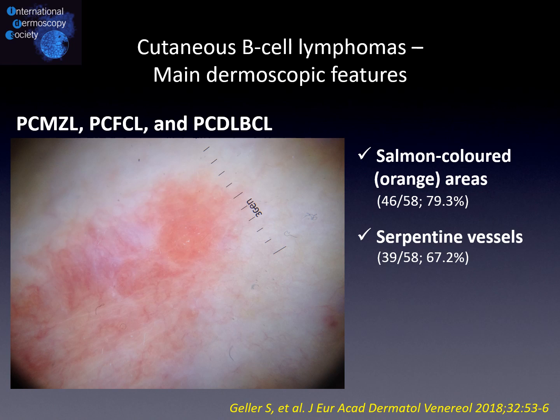According to the larger study on the topic, we don't have any relevant difference in dermoscopic appearance among the three categories of cutaneous B cell lymphomas. The two main dermoscopic features are represented by salmon-colored orange areas, visible in about 80% of cases and due to a very dense, compact cellular infiltrate in the dermis, and serpiginous vessels, visible in about 67% of cases. This last finding is less specific compared to the salmon-colored orange areas.